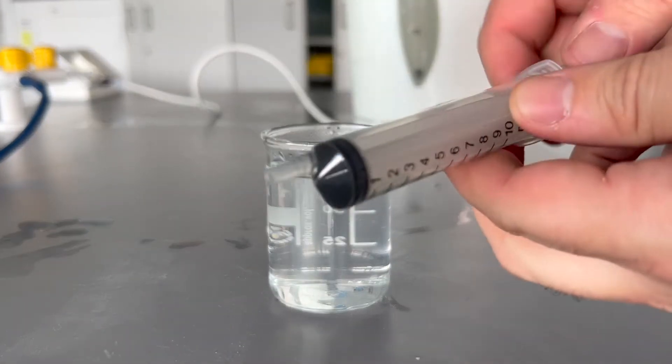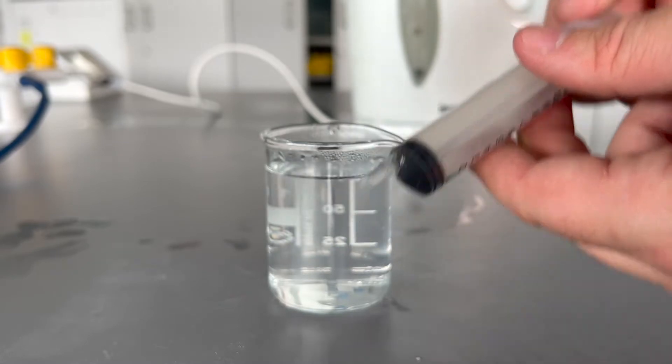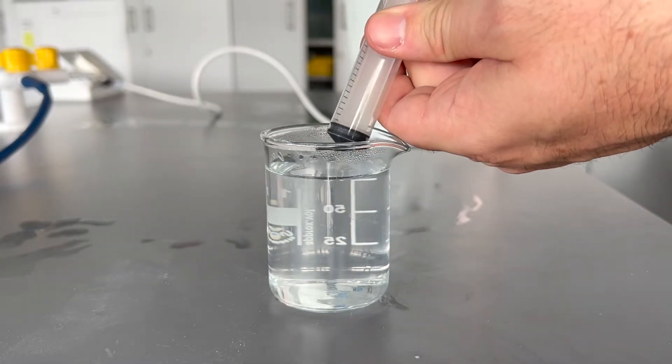In this video we're going to look at how to boil water at a lower temperature than 100 degrees. What you need is a syringe like this and some warm water.